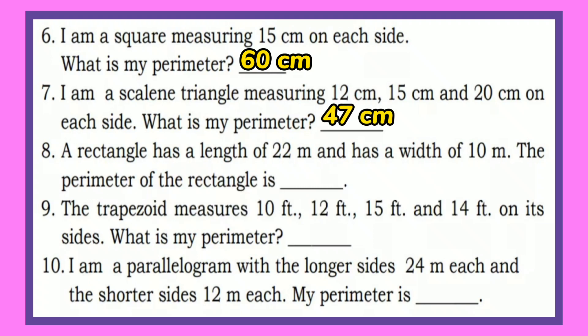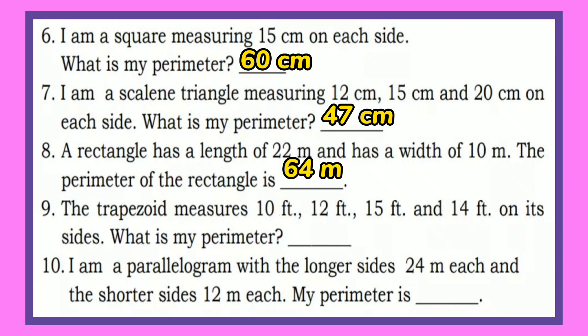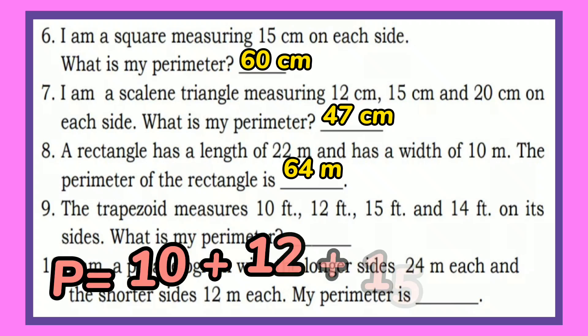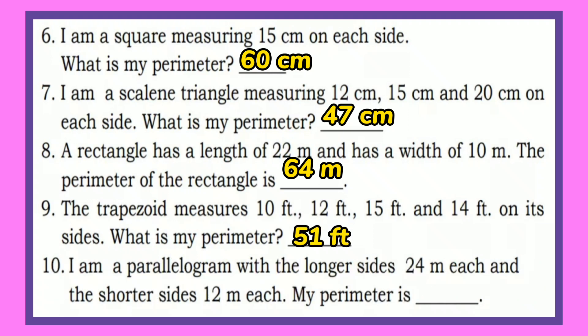Number 8: A rectangle has a length of 22 meters and a width of 10 meters. The perimeter of the rectangle is 22 plus 22 plus 10 plus 10, and the perimeter is 64 meters. Number 9: The trapezoid measures 10 feet, 12 feet, 15 feet, and 14 feet on each side. What is the perimeter? Yes, it's 51 feet.